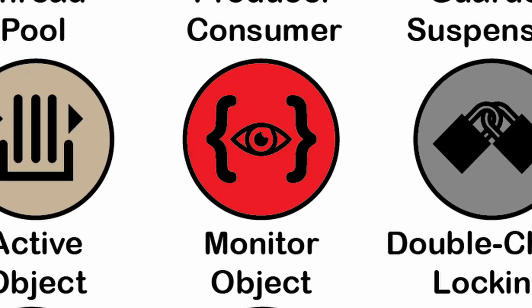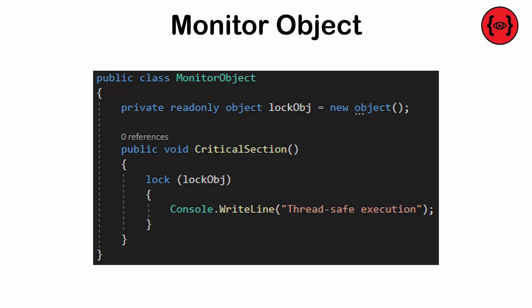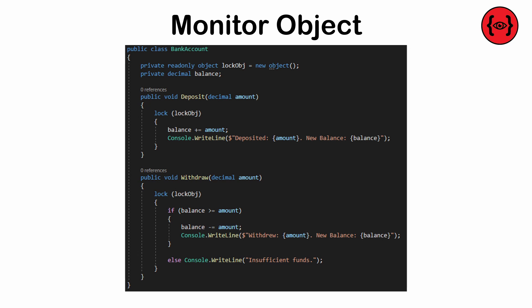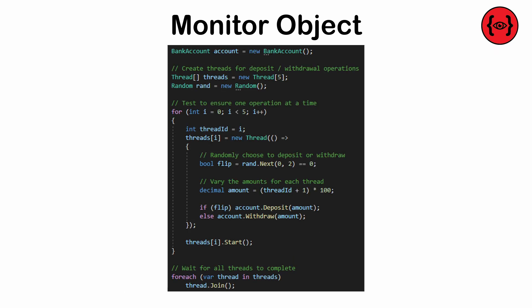The monitor object pattern — a means of simplifying thread synchronization by encapsulating it in a single object. The monitor ensures threads access shared resources in a controlled manner. It's a versatile pattern but can create bottlenecks if overused.